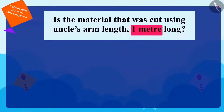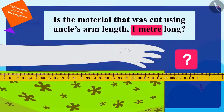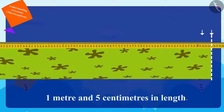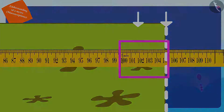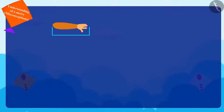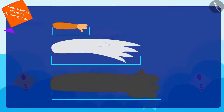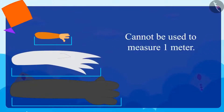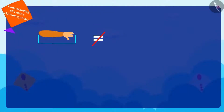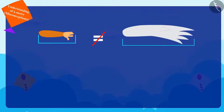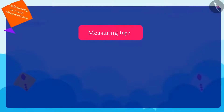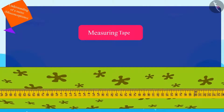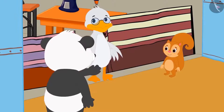Children, is the material that was cut using uncle's arm length one metre long? No. Uncle gave one arm-long material which is one metre and five centimetres long. Chanda explained to uncle and Golu that the length of one arm varies for everyone, so they cannot use it to measure one metre. For example, the length of her one arm is not equal to the length of uncle's one arm, and the length of uncle's one arm is not the same as one metre. She told uncle that he should measure the material using his measuring tape. Both Golu and uncle understood this.